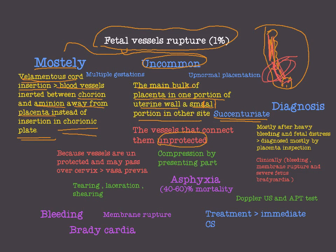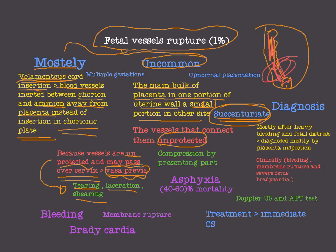In both cases — velamentous cord insertion and succenturiate placenta — we have unprotected blood vessels. If these blood vessels pass over the cervix, then we have a case of vasa previa. So vasa previa is not velamentous cord insertion by itself, and not succenturiate by itself, but if the unprotected blood vessels pass over the cervix, then we have vasa previa. These unprotected blood vessels are vulnerable to tearing, laceration, and shearing.